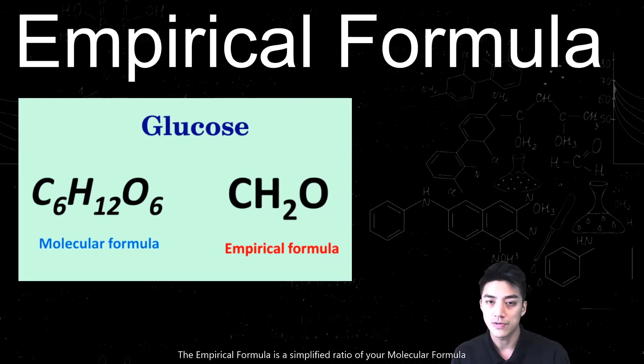So just take glucose, for example. The molecular formula for glucose is C6H12O6. The simplified ratio of that would be CH2O, and that is known as the empirical formula of glucose.